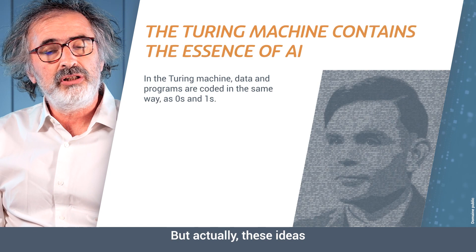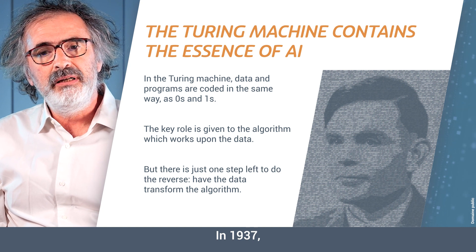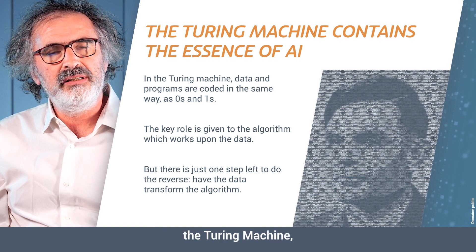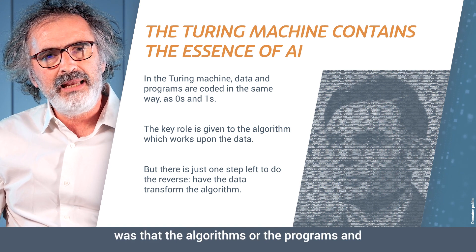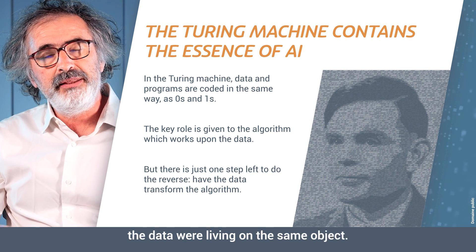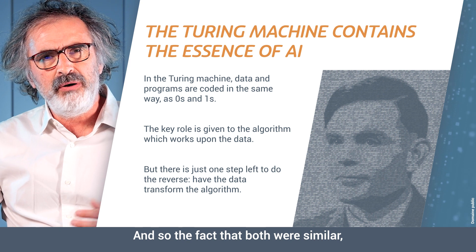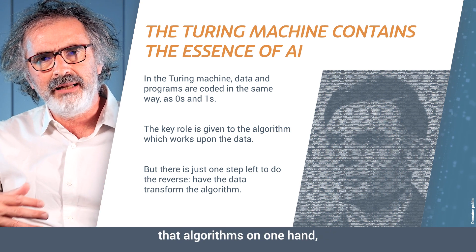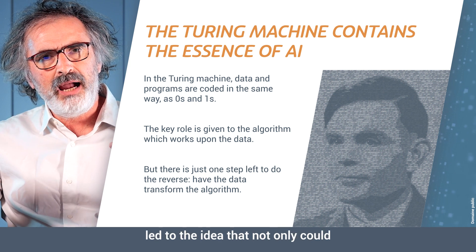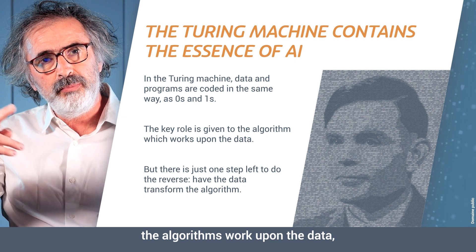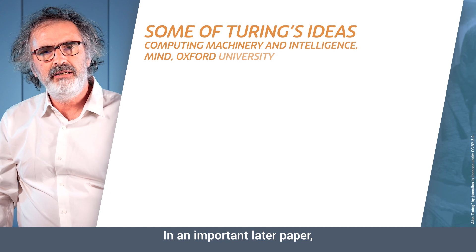But actually, these ideas came from far behind. In 1937, Alan Turing invented what is now known as the Turing machine — a machine in which the particularity was that the algorithms and the data were living on the same object. The fact that both algorithms and data were just zeros and ones led to the idea that not only could algorithms work upon the data, but the data upon the algorithms.